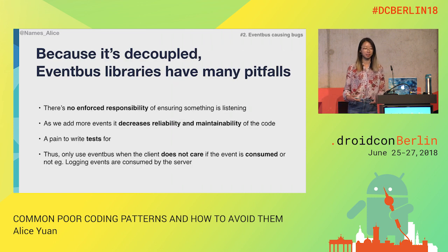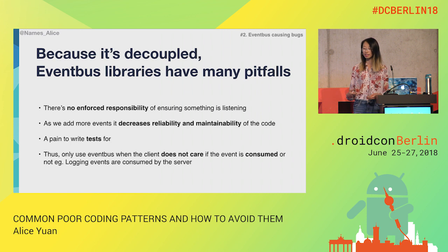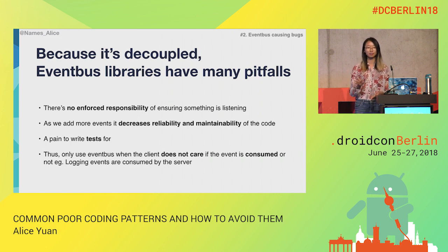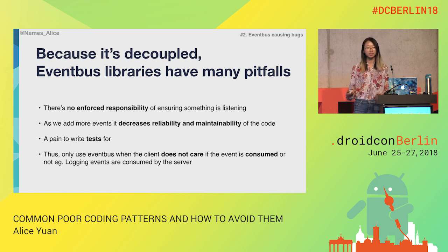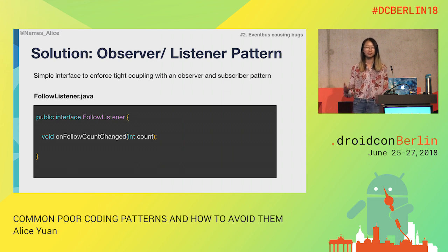Because it's decoupled, EventBus libraries have many pitfalls. There's no enforced responsibility of ensuring that something is listening. As we add more events, it decreases the reliability and the maintainability of the code. On top of all of that, it is a pain to write tests for. Now, I don't want to completely bash EventBus — it's just that using EventBus for UI updates doesn't make sense in this use case. We should be using EventBus when the client does not care if the events are being consumed, such as for logging events, performance events, or creating a service where we don't care whether or not that service is being launched.